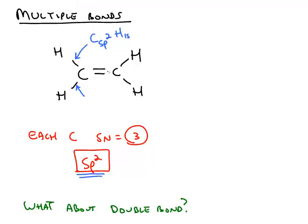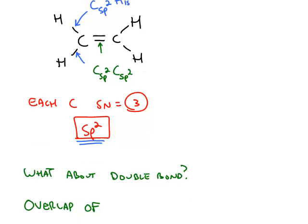One of the bonds between the two carbons comes from the sp2 of the carbon on the left overlapping an sp2 orbital from the carbon on the right. But the question now is, what about that second bond?